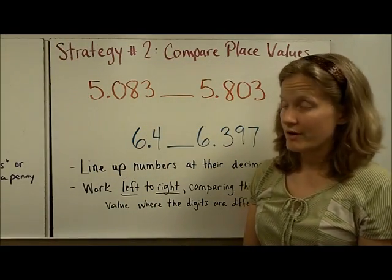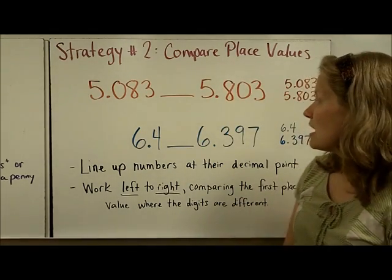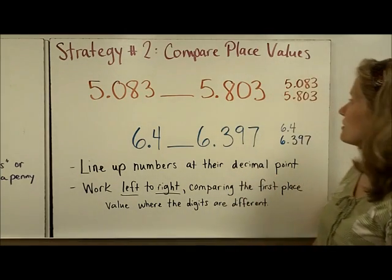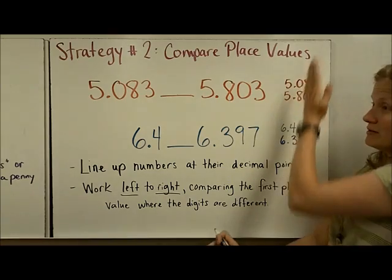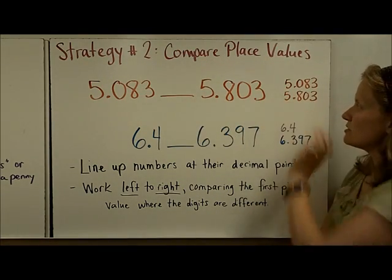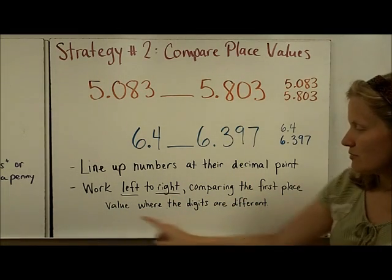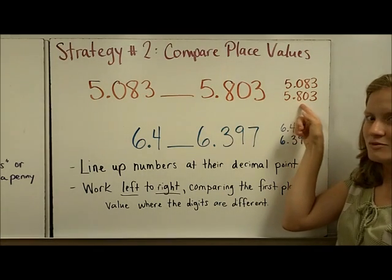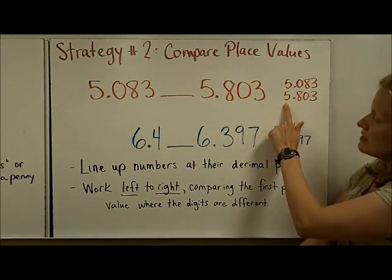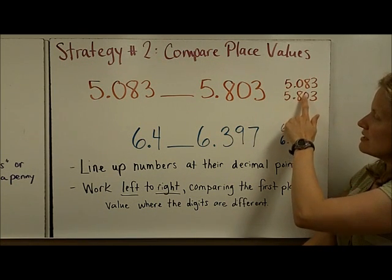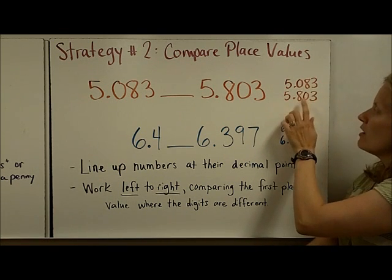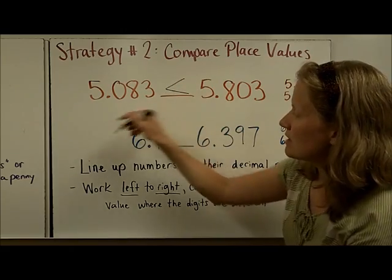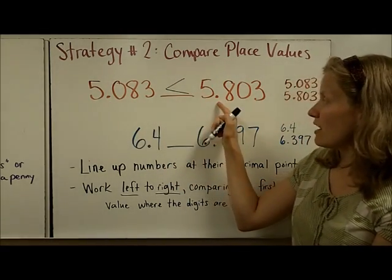A second strategy for comparing and ordering decimals is to compare the place values. Take two decimals and line up their numbers at the decimal point, rewriting them vertically. Then work left to right, comparing the first place value where the digits are different. Start with the biggest place value — because dollars are worth way more than dimes, pennies, or nonsense. In the ones place, they're the same. In the tenths place, I immediately see that eight is greater than zero. It doesn't matter what comes after that — this is the larger number. So five and eighty-three thousandths is less than five and eight hundred three thousandths.